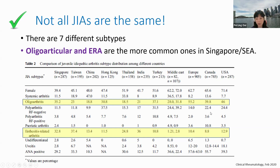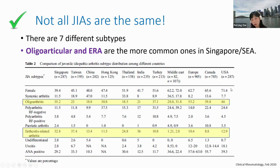In terms of gender profile, in Asia the majority of JIA patients are actually males, because of the ERA subset — ERA tends to occur more in males. Whereas in the Caucasian and Middle Eastern populations, JIA tends to occur in females, because there it's the oligoarticular and polyarticular subtypes that predominate.